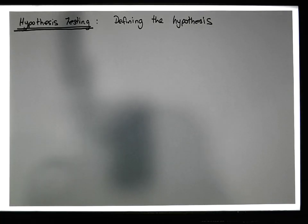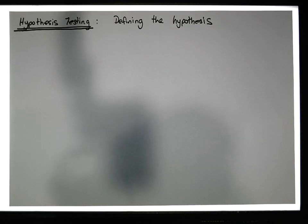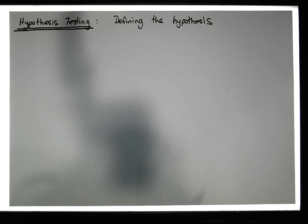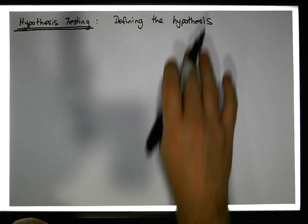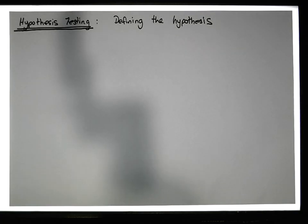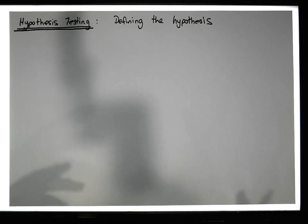There's a lot of talk about putting the status quo as the null and the thing that you want to test as the alternative. I really want to present an argument about how to define a hypothesis. Some of those things are correct and some can actually be incorrect — it depends on the scenario and what you're actually trying to test.